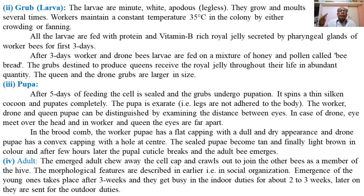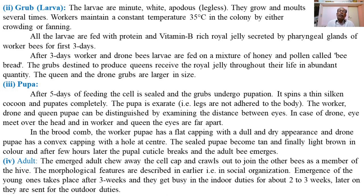After three days of development, worker and drone larvae are fed a mixture of honey and pollen called bee bread. Grubs destined to produce queens receive royal jelly throughout their larval life in abundant quantity. The royal jelly influences the development of the ovary in the queen larva. The queen and drone grubs are larger in size, while worker larvae are smaller.